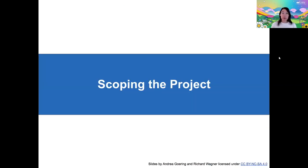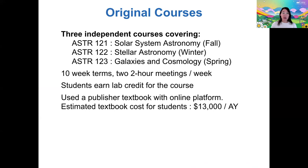I first want to tell you a little bit about why we started this project and how we decided on its scope. Our original courses were a sequence of three independent topics covering different astronomy areas over three 10-week terms. Our students earn lab credit for this course. And originally, we used a traditional textbook with an online homework platform, which costs students $60 per term. Since there are three sections per term and 24 students per section, this was an estimated total cost per academic year of $13,000.